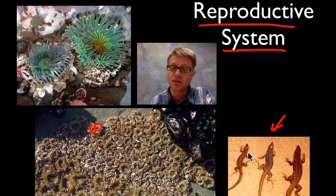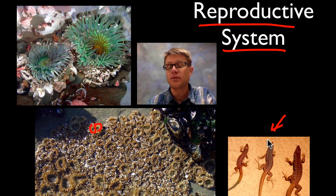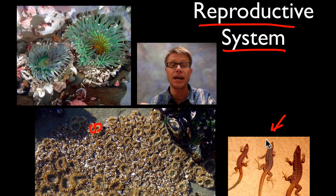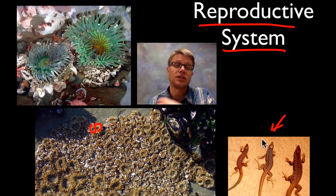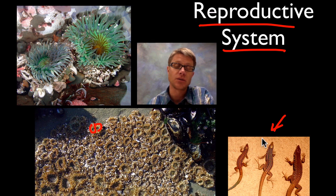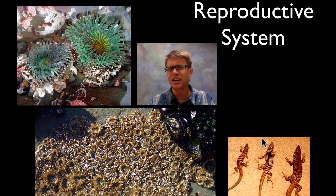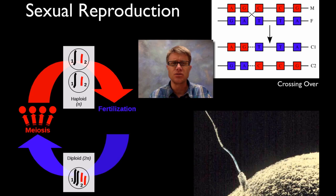Just like this lizard right here — this is the New Mexico whiptail lizard, the one in the middle. All of the species of that lizard are female, and they reproduce through a process called parthenogenesis, where one egg just becomes another lizard. It's a diploid cell that becomes a diploid organism. But most life doesn't do that.